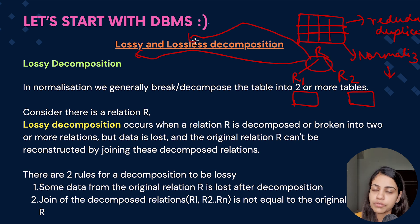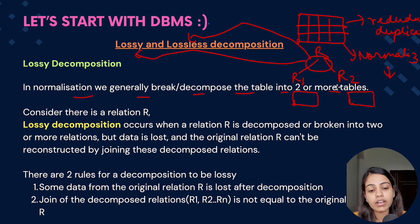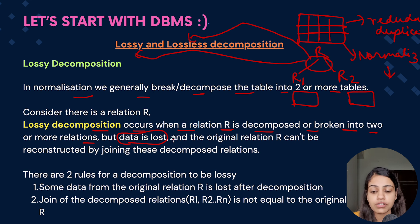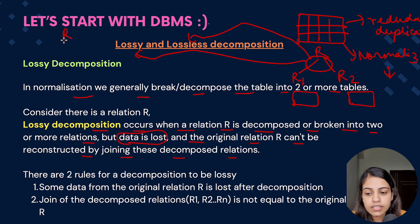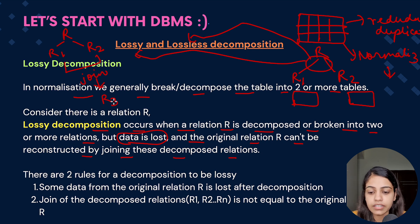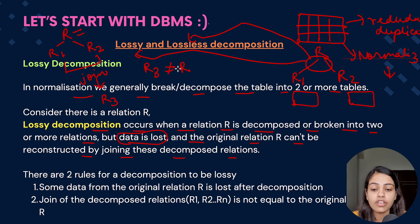In normalization we generally break or decompose the table into two or more sub-tables. Lossy decomposition occurs when a relation R is decomposed into two or more relations but the data is lost. In this kind of decomposition, the data is lost and the original relation R can't be reconstructed by joining the decomposed relations. If R is broken into R1 and R2 and we perform a join operation to get R3, then according to the definition of lossy decomposition, R3 would never be equal to R.